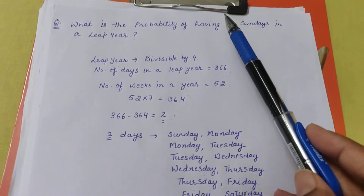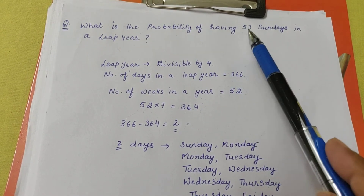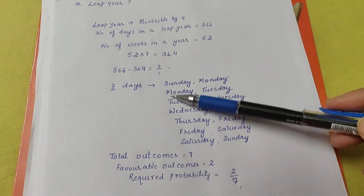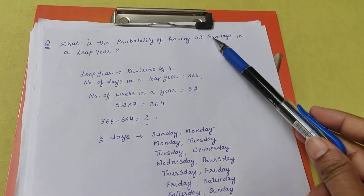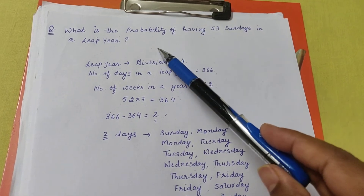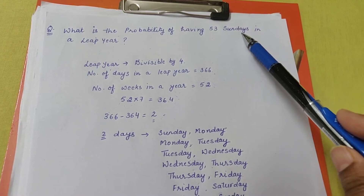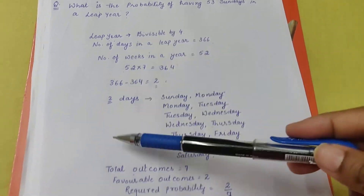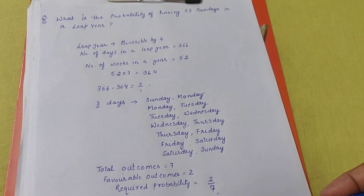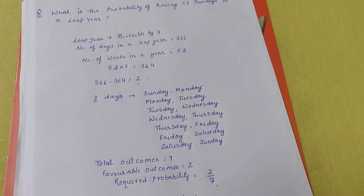One more thing: this method does not apply to Sunday only — it applies to any other day of the week as well. For example, if the question is what is the probability of having 53 Mondays in a leap year or in a non-leap year, the same procedure has to be followed.